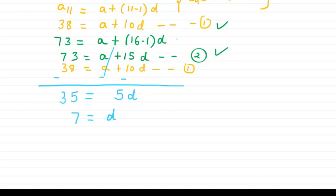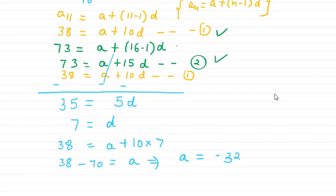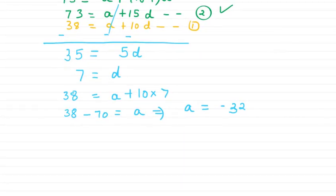Now we can put the value of d in any of the two equations, so we can find our a. 38 equals to, I am putting this value in first equation. So 38 minus 70 will be a. From here I will get a equals to minus 32.